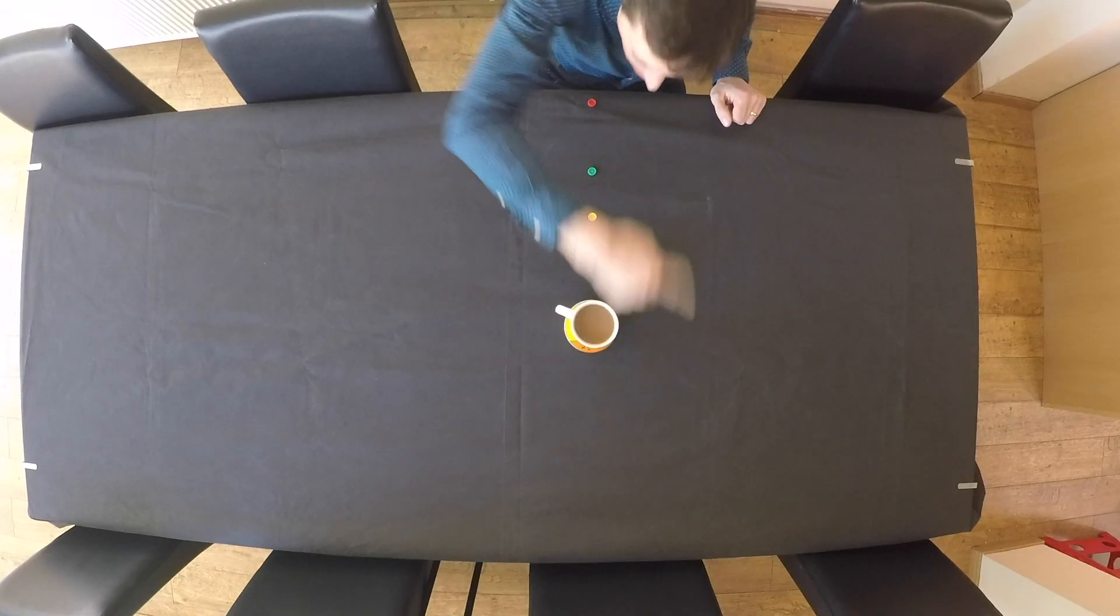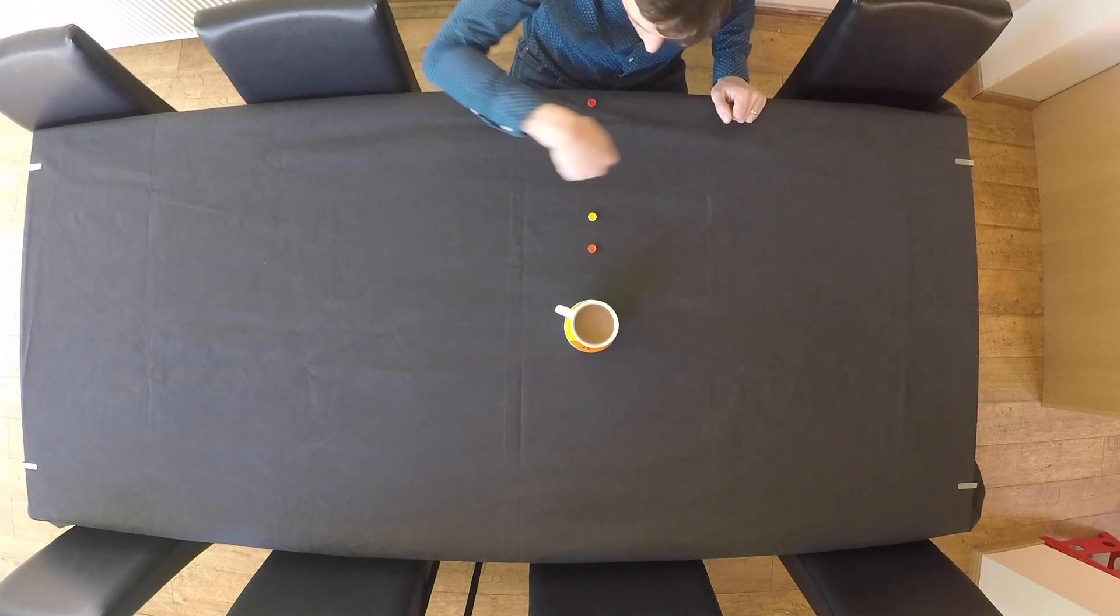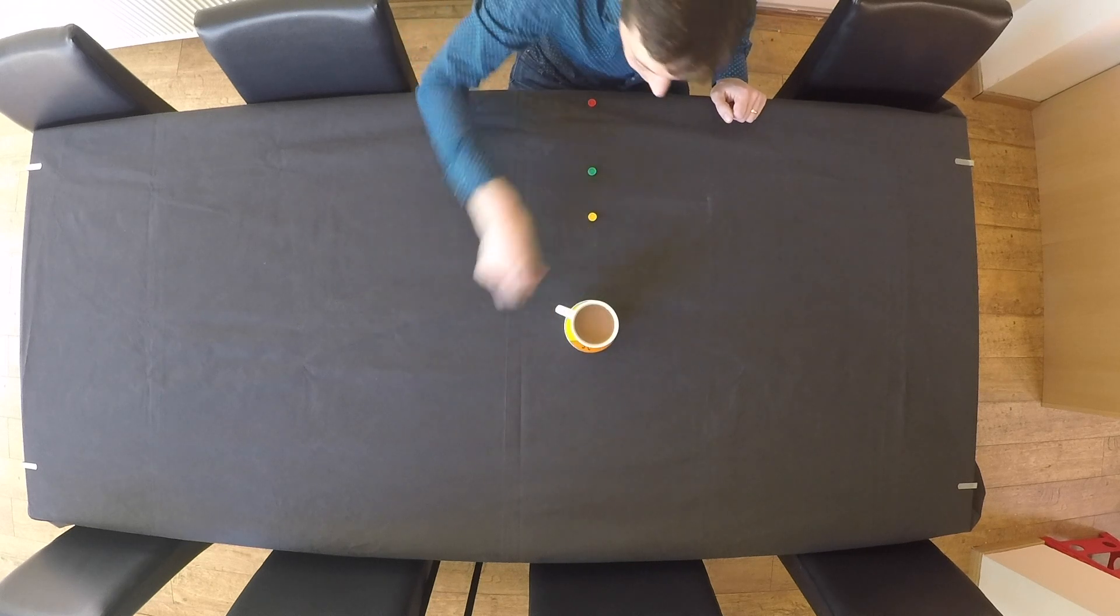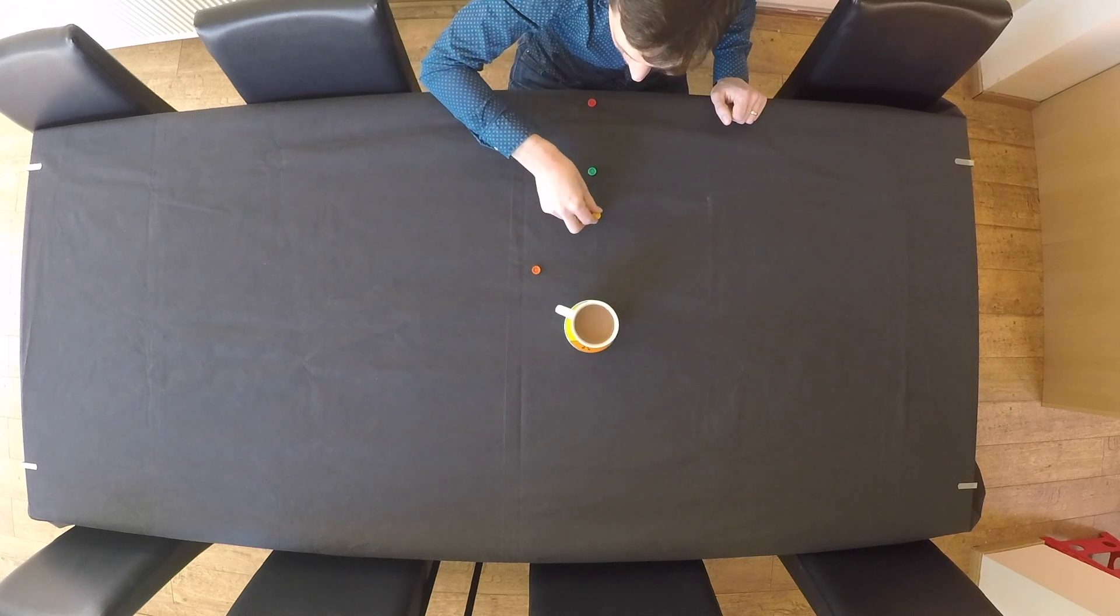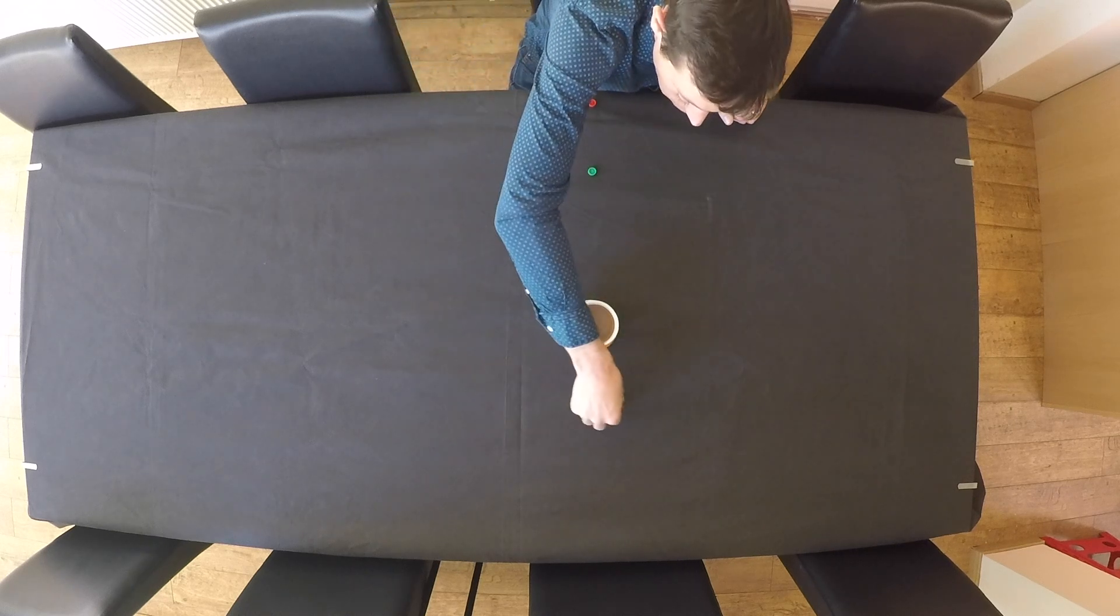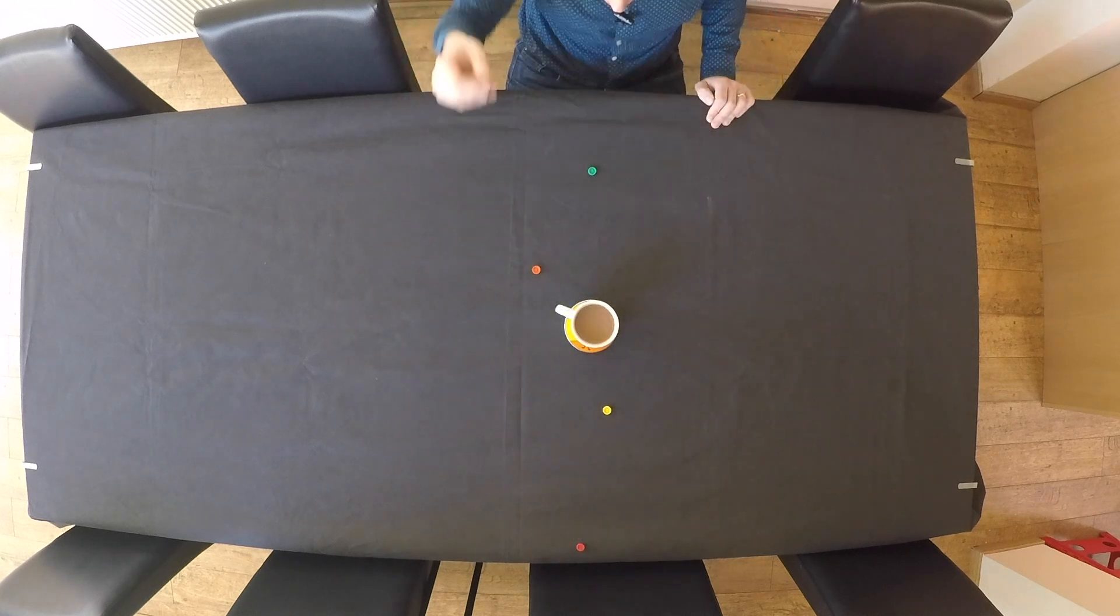But the planets move around the Sun. In the time it takes Earth to do one full orbit, Mercury would have done one, two, three, four and a bit. Venus would do one and a half and Mars will have only done about half an orbit.